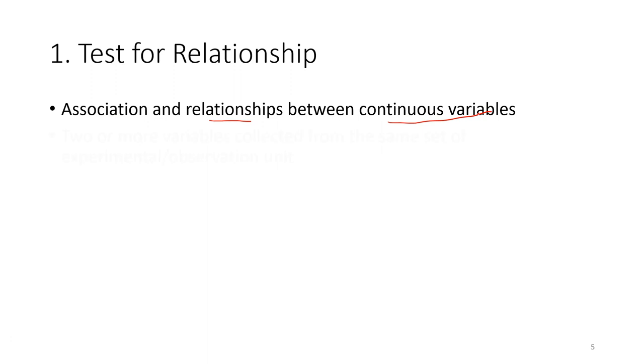Test for relationship is when we want to find the association or relationship between continuous variables—two or more variables collected from the same set of experimental or observation units. For example, if you have three students and for each student you measure at least two variables, maybe one is body height and another is body weight. For each experimental unit we measure two or more variables.